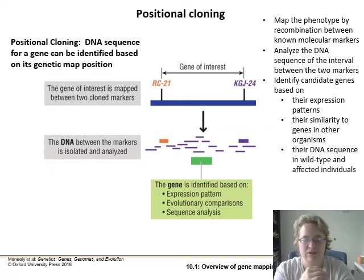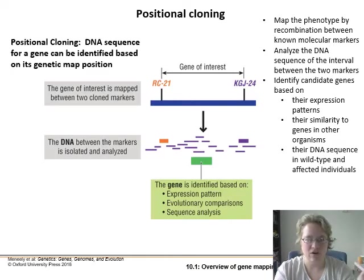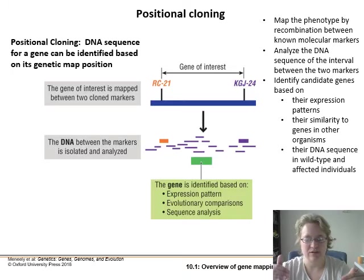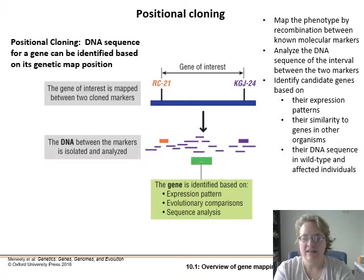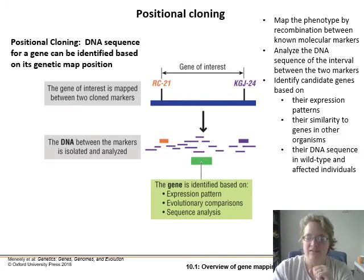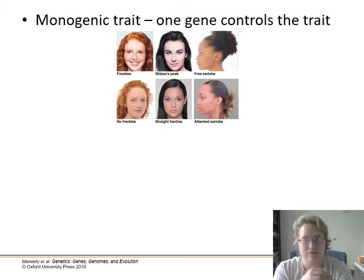Positional cloning is where, if we know where two markers or sites are and a gene we want to know more about is in between those sites, we can map that area and target our search. Markers could be other genes, SNPs, or copy number variation sites — anything we know what's there. We can then walk in from those two endpoints and look for a particular gene.